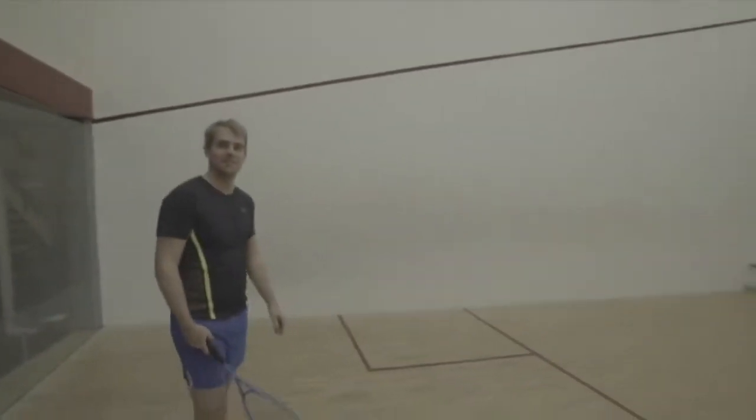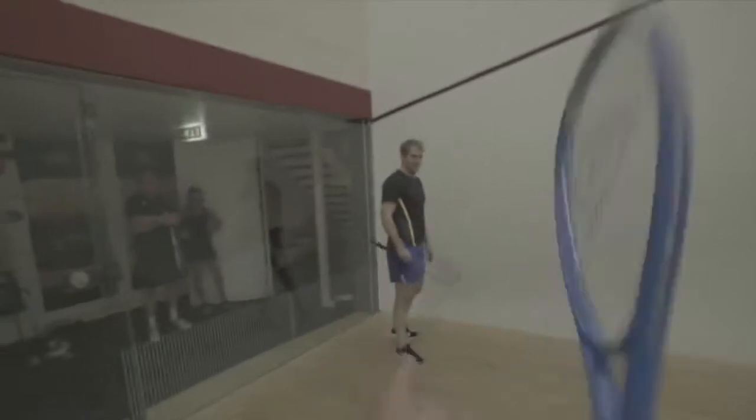Well, the whole poem goes that way, and he roars and shouts from beginning to end. Forsake thy cage, thy rope of sands, which petty thoughts have made, and made to thee good cable to enforce and draw and be thy law, while thou didst wink and wouldst not see. Away, take heed, I will abroad.